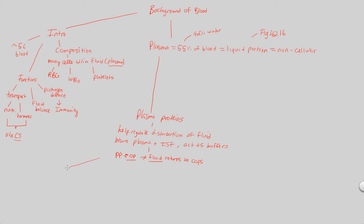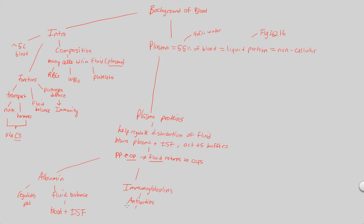There are specific proteins to take note of. Albumin is a plasma protein found within the plasma of blood. It is functional in regulating pH, and in addition it is involved in fluid balance — specifically between blood and ISF, relating to blood pressure versus osmotic pressure. Also, plasma proteins include immunoglobulins, which are in other words antibodies. More on these when we talk about immunity, but understand antibodies as defenders against foreign invaders entering the body.